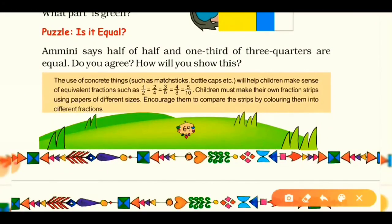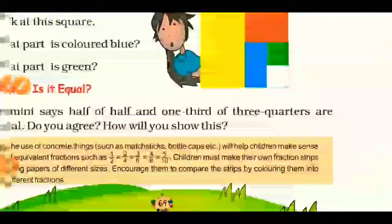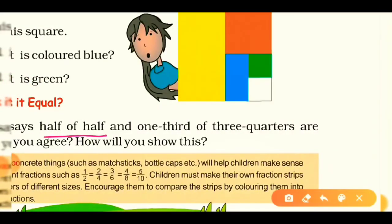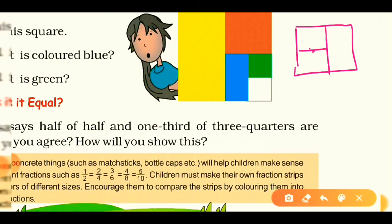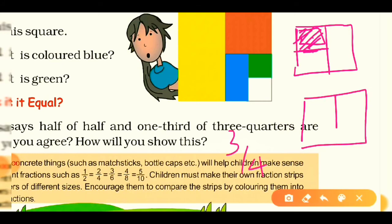Our fourth topic is puzzle. Amini says half of half and one-third of three-quarters are equal. Do you agree? First, let's solve half of half. Take a whole picture and make it half — half of half is one-fourth. Now for one-third of three-quarters: three-quarters means three upon four, so divide the whole into four equal parts and take three parts.